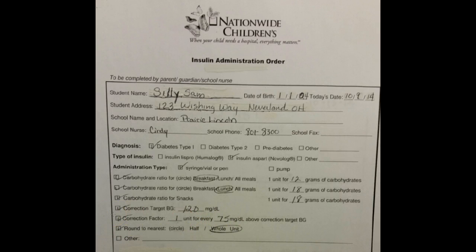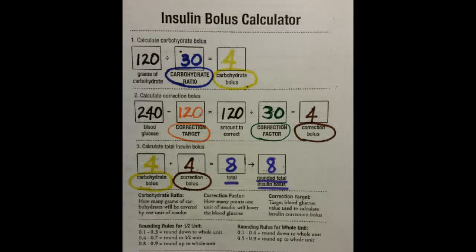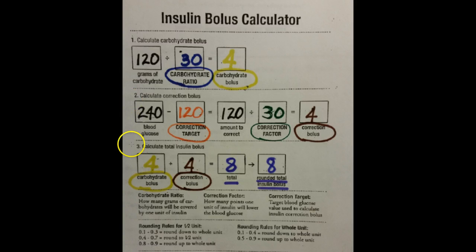Once we have the insulin administration orders, we're ready to begin calculating insulin dosing. The insulin dose calculator shown here is a wonderful tool to help with that. Insulin dosing is calculated in three steps: first, we calculate the insulin needed to cover the carbohydrates a student will eat; second, we calculate the correction bolus for elevated blood glucoses; and last, we add those two calculations together and round to the nearest half or whole unit to get the total insulin dose.